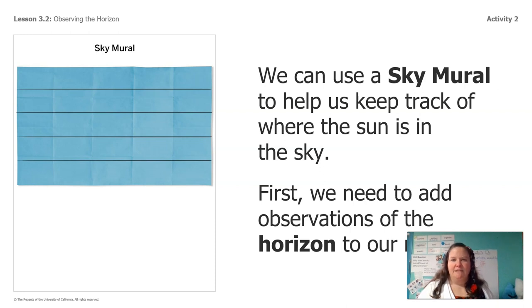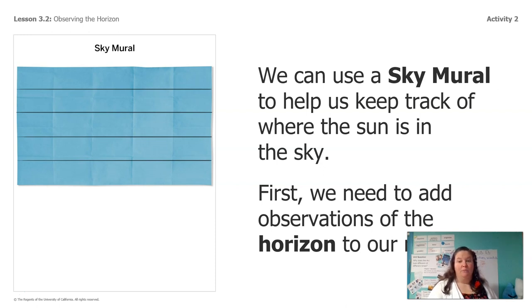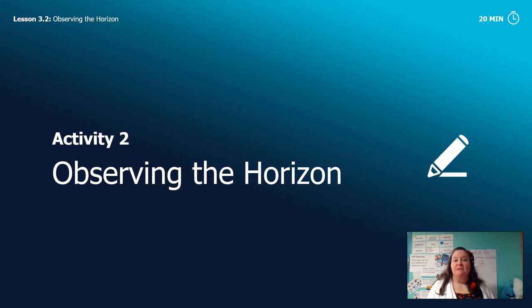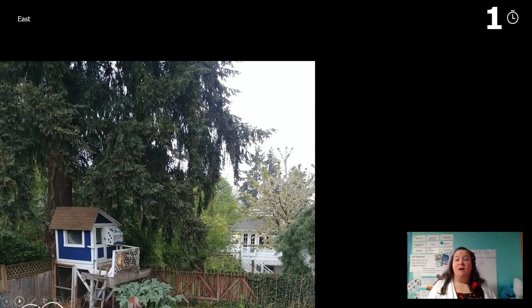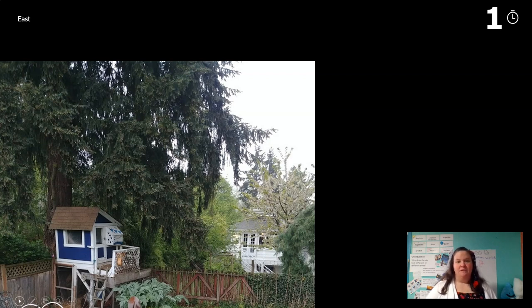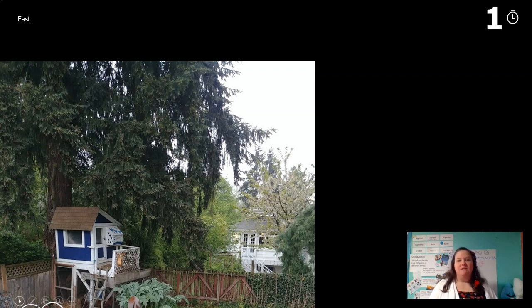We're going to create a sky mural to help us keep track of where the sun is in the sky. First, we need to add the horizon to our mural. So what I want you guys to do next is make some observations of the horizon where you are. I went outside my house — we have to kind of change this activity because we're not all together. I took five pictures, and I'm going to show you what I did so that afterwards you can do some part of this project on your own.